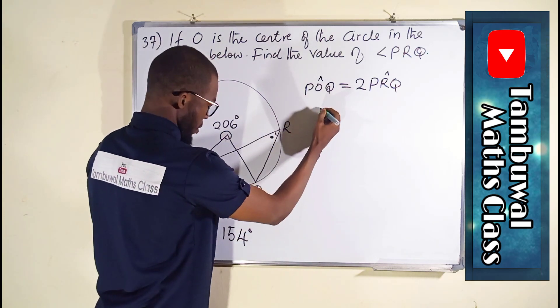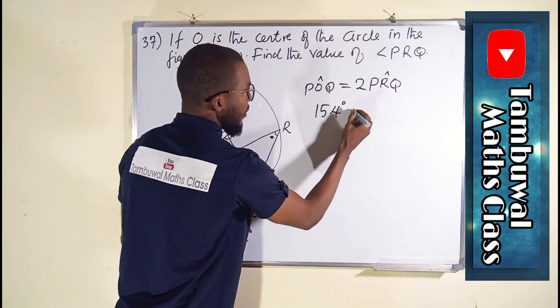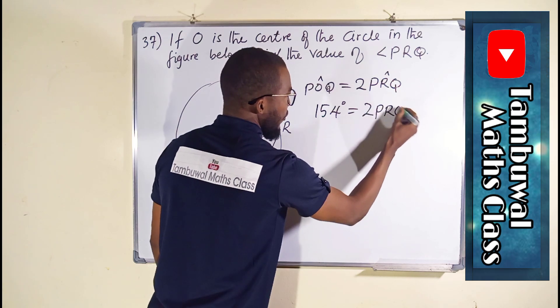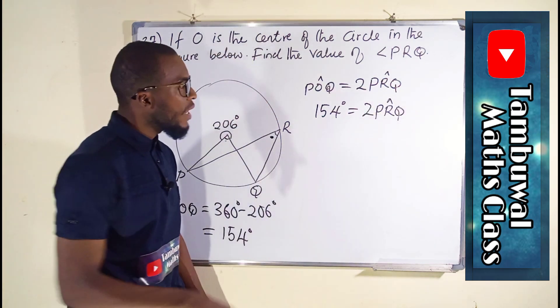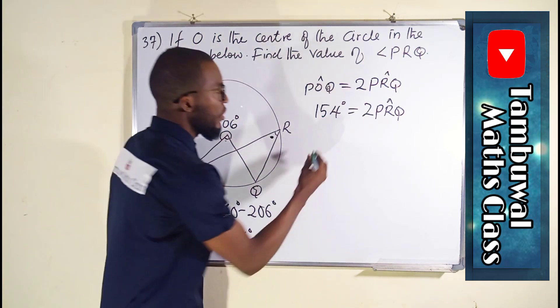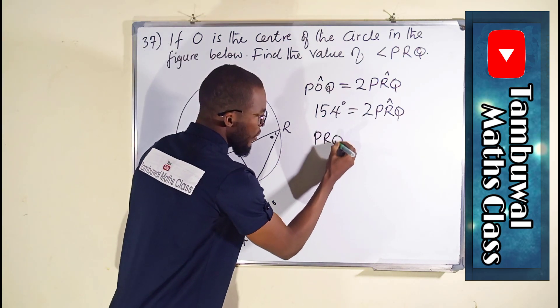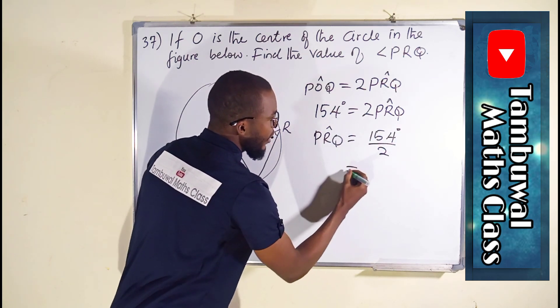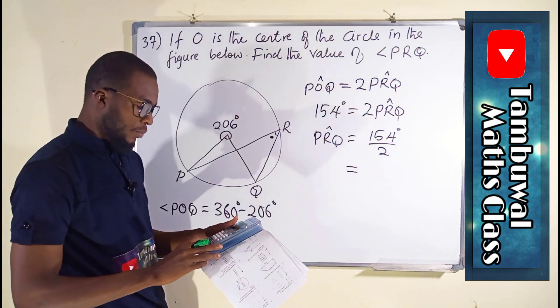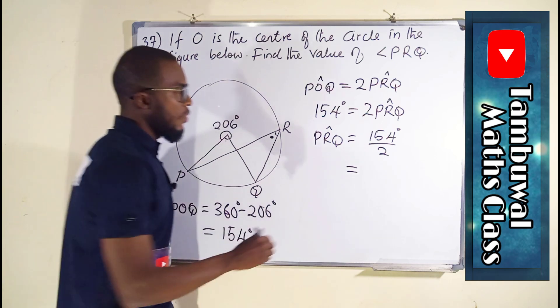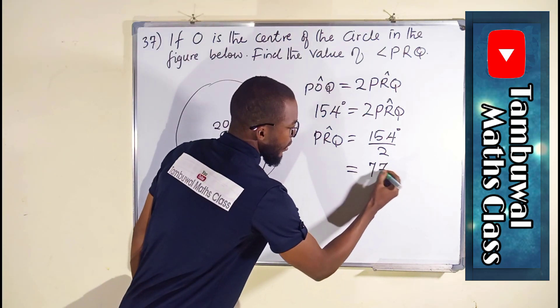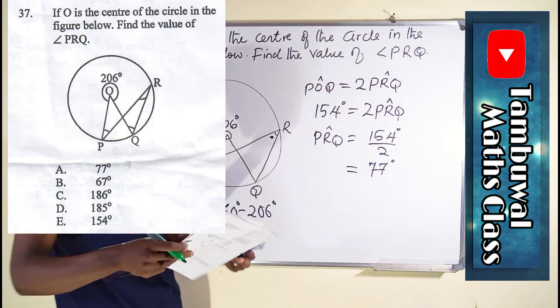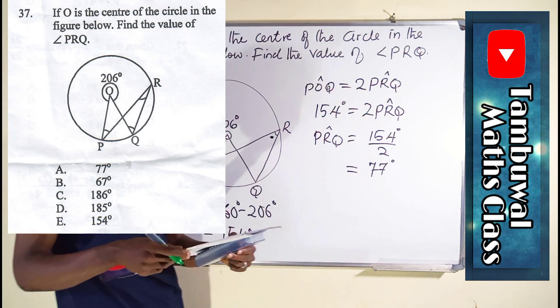Therefore, since this one is giving us 154 degrees, and this one is still unknown, 2PRQ, we can just divide both sides by 2 to obtain the required angle. So angle PRQ will just be equal to 154 degrees divided by 2. And finally, we obtain 77 degrees as required, which is option A here. Now let us move on to question number 38.